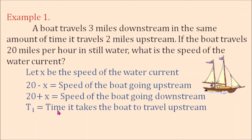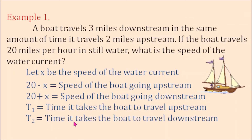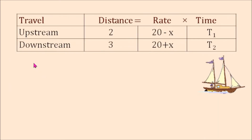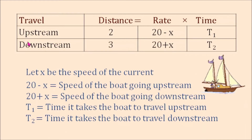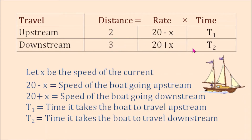Let t-sub-1 be the time it takes the boat to travel upstream, and t-sub-2 be the time it takes the boat to travel downstream. Now we are going to organize this information using a table. When it travels upstream, the distance is two miles, the rate is 20 minus x, and the time is t-sub-1. When it travels downstream, the distance is three miles, the rate is 20 plus x, and the time is t-sub-2.